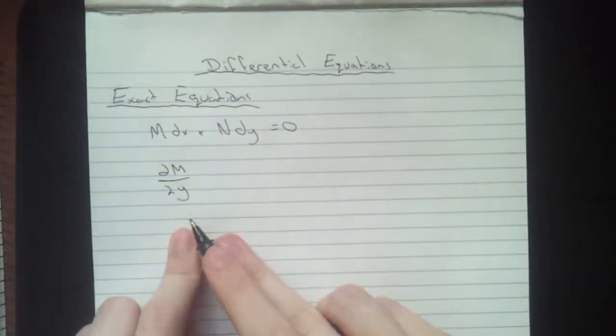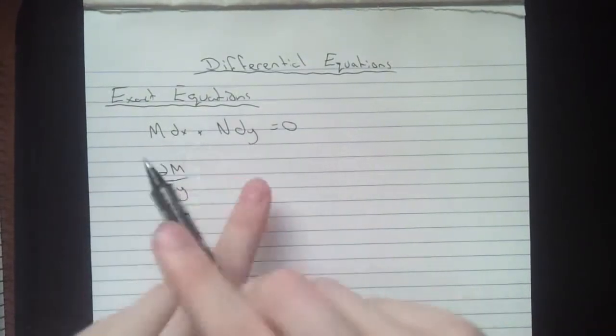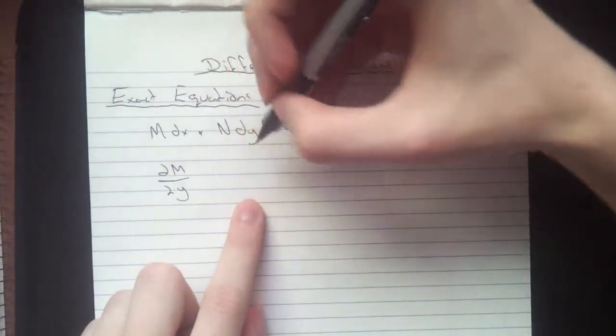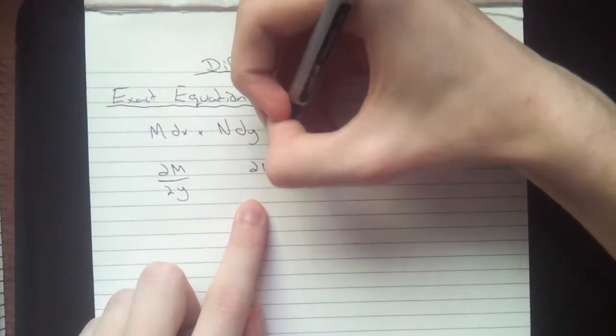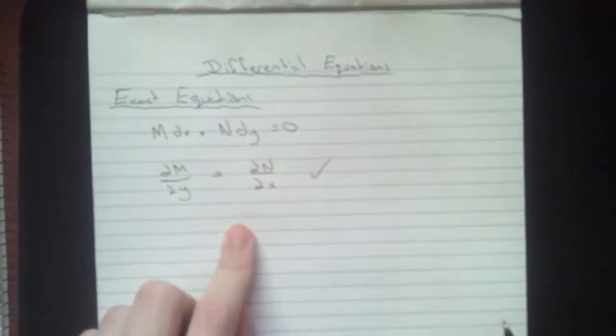So easy way to remember, just opposite of what's here. That way if you mix up the N and the M, not that big of a deal. And you also want to take ∂N/∂x. And if they're equal, you're good. You got an exact equation. You can use this method to solve.